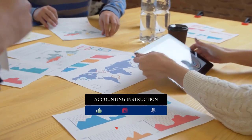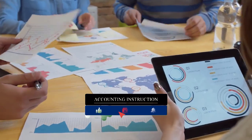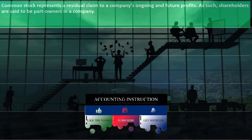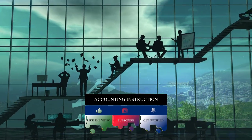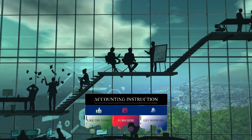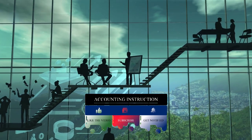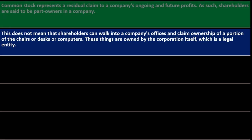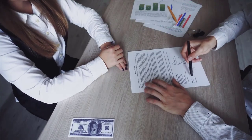Common stock represents a residual claim to a company's ongoing and future profits. You're looking for the company to generate more revenue in the future and you have an equity interest — a claim in that growth and value. This does not mean that shareholders can walk into a company's office and claim ownership of a portion of the chairs, desks, or computers.